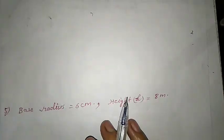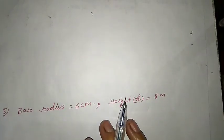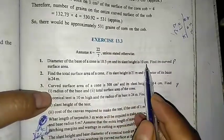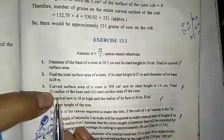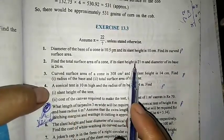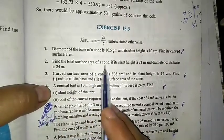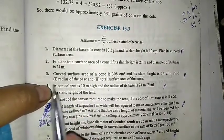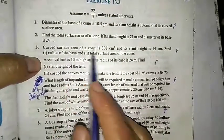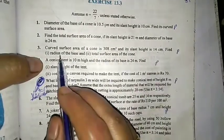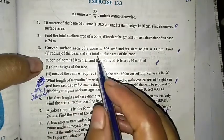Now we start Exercise 13.3. Question 1 is direct - diameter of base and slant height are given, so we use CSA = πrl. Question 2 also has slant height and diameter given, so we can find radius and total surface area directly. Question 3: the CSA of a cone is 308 cm² and the slant height is 14 cm. We have to find the radius of the base and the total surface area.